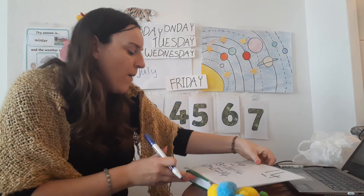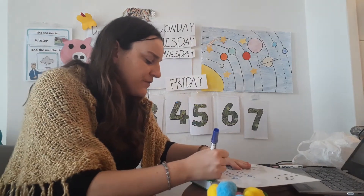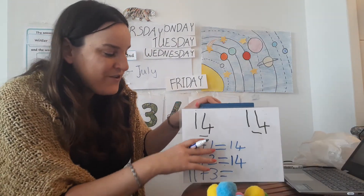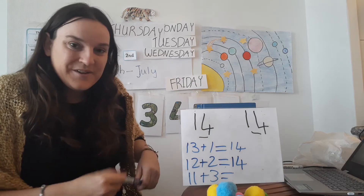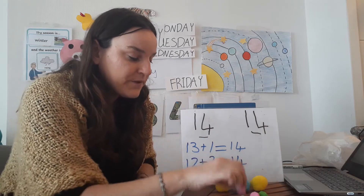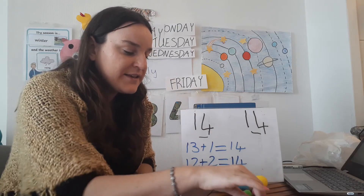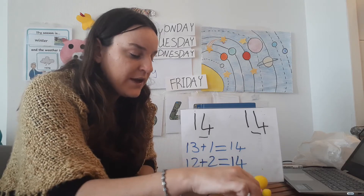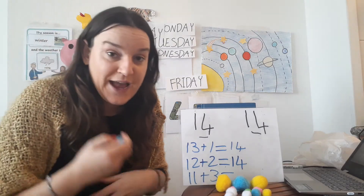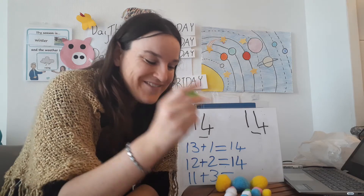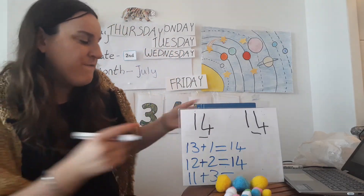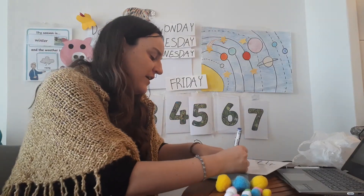Well done everyone. Let's try one more: 11 add 3. Let's try and do 11 add 3. Shall we see? 1, 2, 3, 4, 5, 6, 7, 8, 9, 10, 11. So we have 11. Let's add 3. 12, 13, 14. So 11 add 3 is 14.